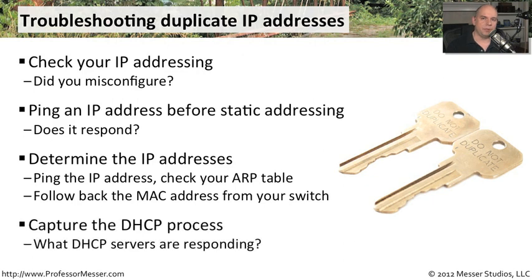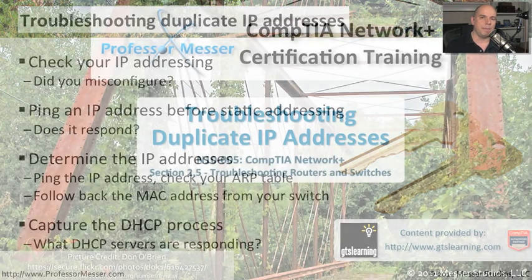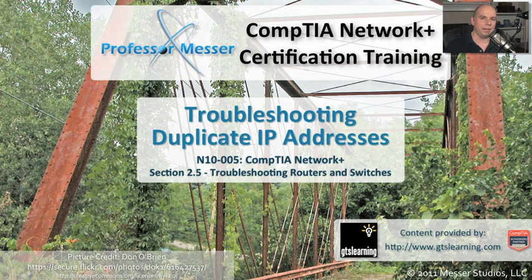If you feel that your duplicate IP address issue is related to a mismatch or some other problem with DHCP, you can put a packet capture device on your network and watch the communication that occurs while a DHCP address is being assigned. Then you can look through the MAC addresses of those DHCP responses to determine where those DHCP servers are, and track them down to see if they are configured correctly. By understanding how IP addresses are assigned and performing these troubleshooting processes, we can maintain the uptime and availability of our network.